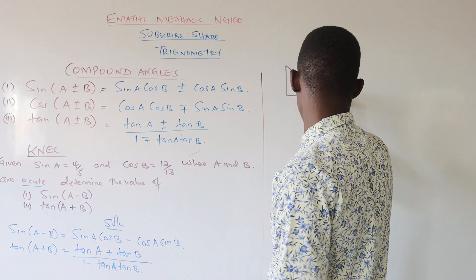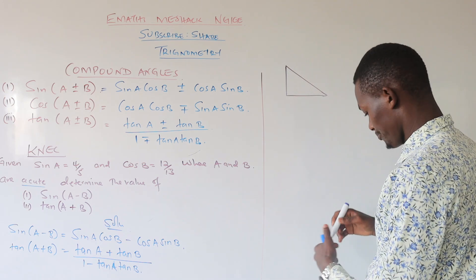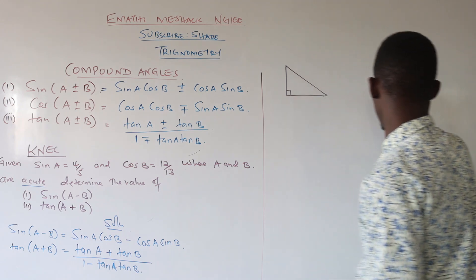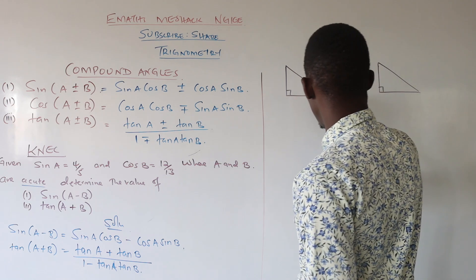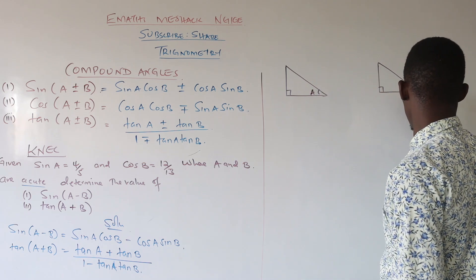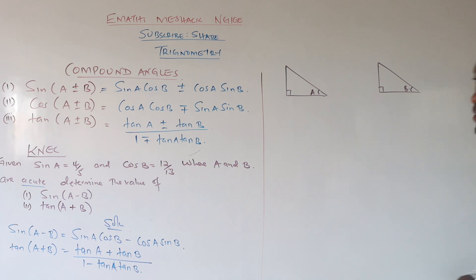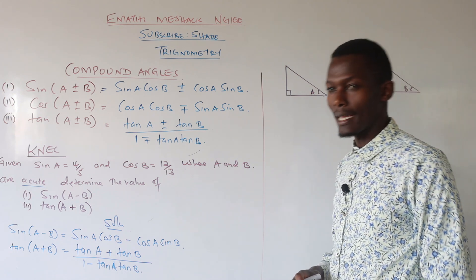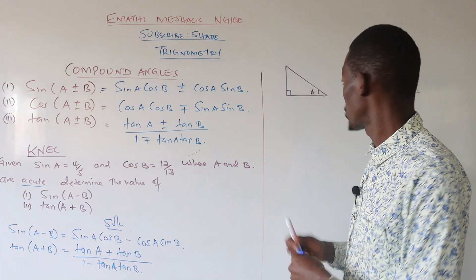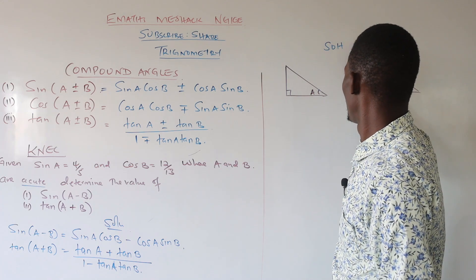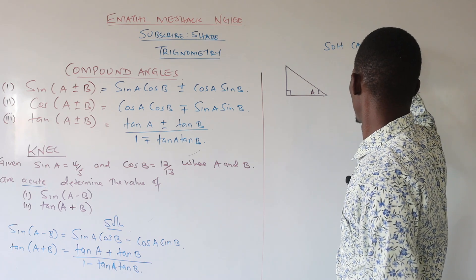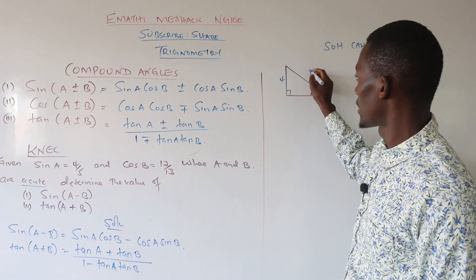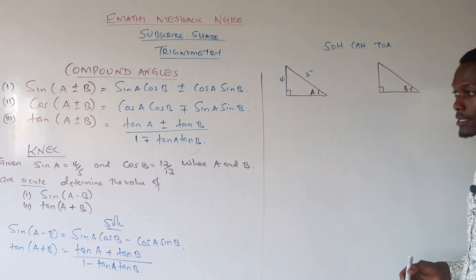We draw two triangles: the first one for angle A and the second for angle B. We have sine of A as opposite over hypotenuse, so our opposite is 4 and our hypotenuse is 5.